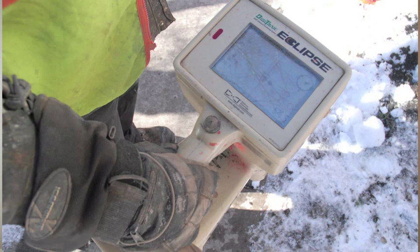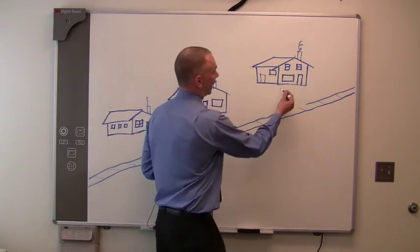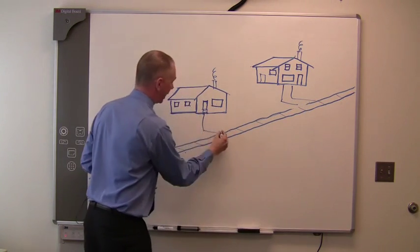The trouble with this technology is you know where you are but you don't know what else is down there and there's a lot of it. Take this neighborhood for instance. You're going to have a sewer line and a water line coming from each house.